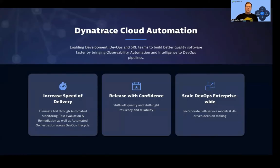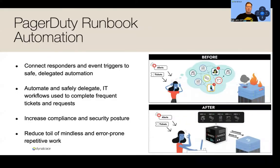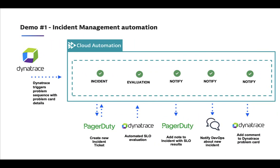The way we make this happen is through an area of Dynatrace called Cloud Automation, which is about delivering software to production as well as dealing with issues that arise in production. PagerDuty is also heavily invested in an area called Runbook Automation — delegating tasks and automated sequences — and it's all about reducing the toil for this kind of error-prone, repetitive work. I'm going to walk through a demo of incident management automation with both Dynatrace and PagerDuty.